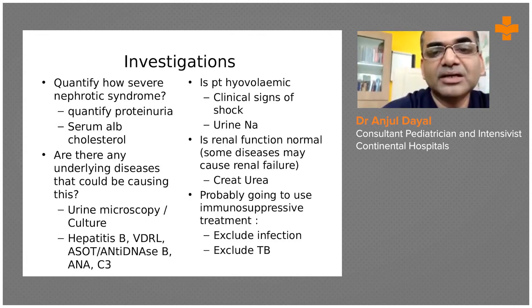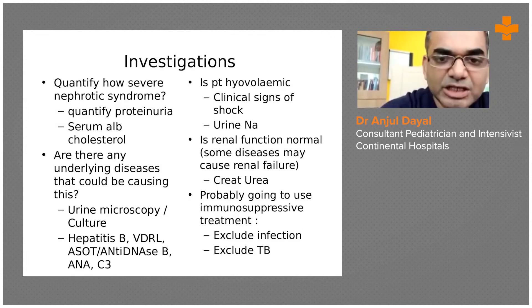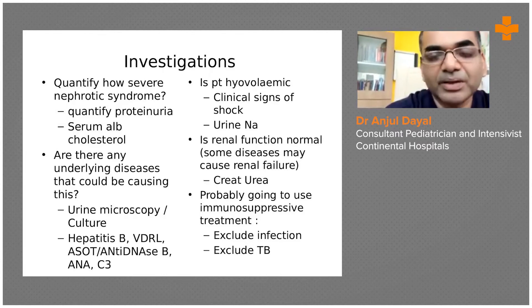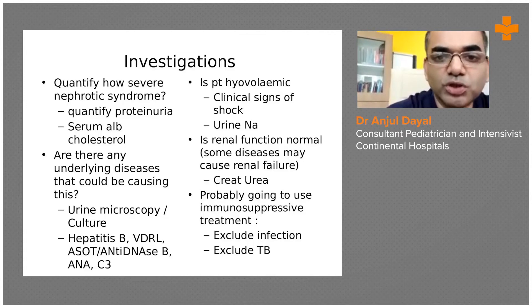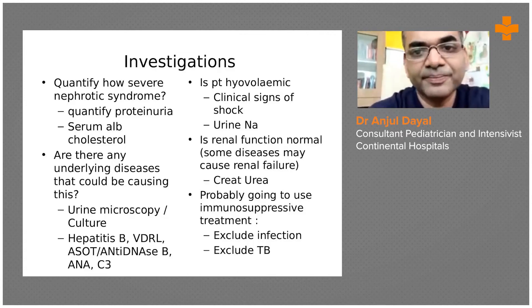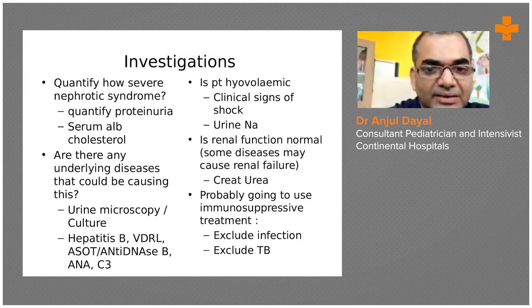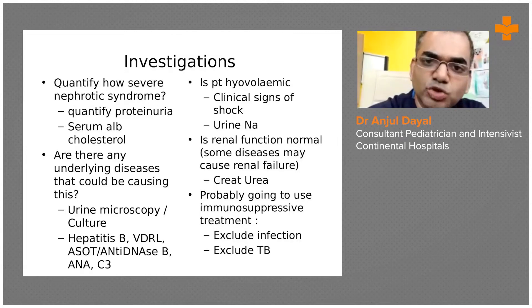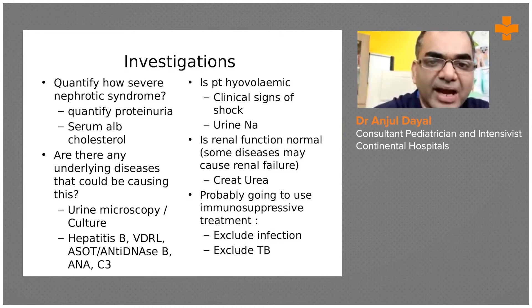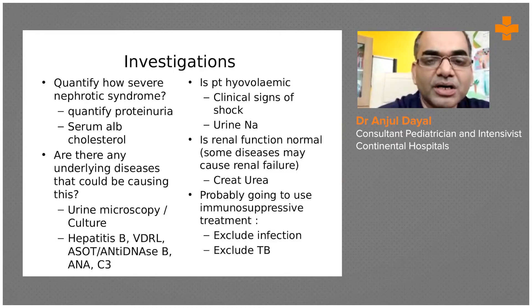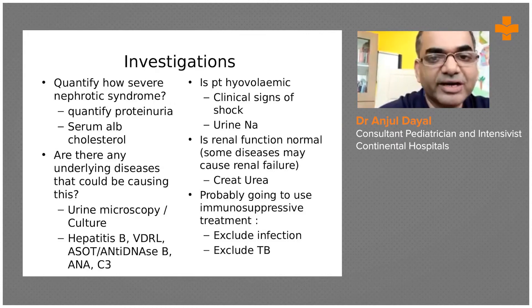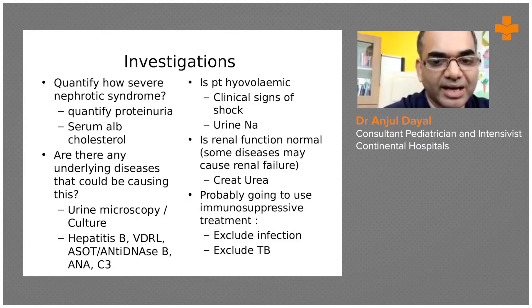Then we look at investigations for kidney function. We do urea and creatinine to look at the underlying renal functions. Usually in minimal change disease, urea and creatinine are normal. Whereas in other diseases — especially membranoproliferative or membranous nephritis — urea and creatinine will be on the higher side.